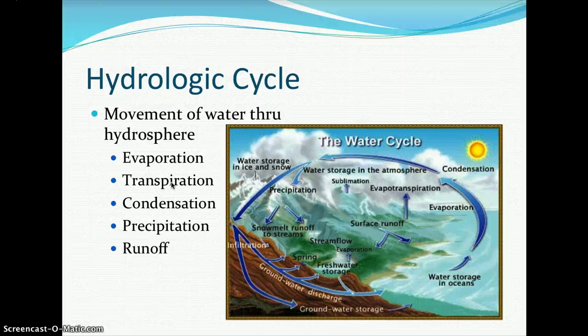In photosynthesis, you learned about transpiration — when stomata open, the guard cells allow gas exchange through pores in the leaf's epidermis. Gases including carbon dioxide, oxygen, and water vapor can pass through. Evaporation of water from plants is called transpiration. Condensation occurs as water evaporates from land and ocean surfaces, rises into the atmosphere, and begins to collect around particles, transitioning from a gaseous state back to liquid. This leads to cloud formation.